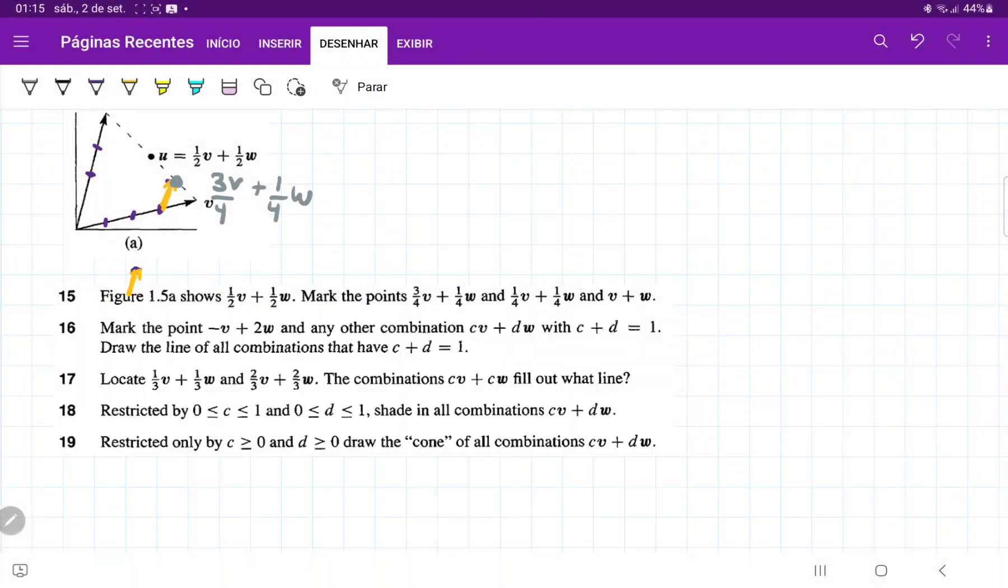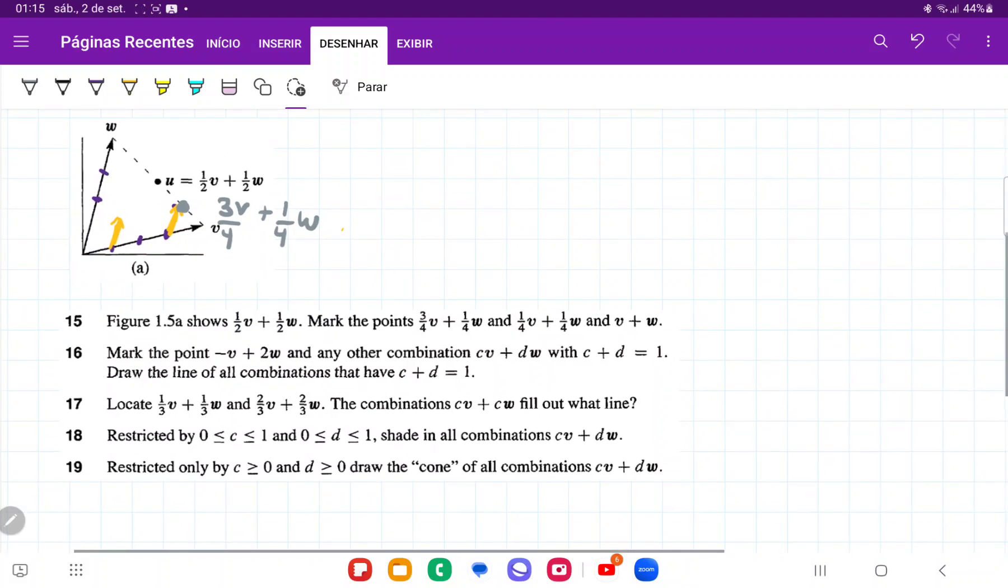Oops, that did not work as I intended it to. So let me do that again. It's going to be this length here and then I'm going to move it and place it here at 1 quarter. So this point here is going to be 1 quarter v plus 1 quarter w.